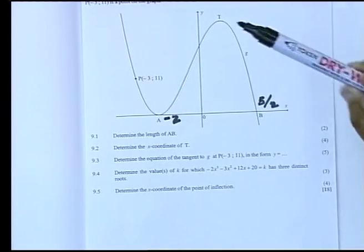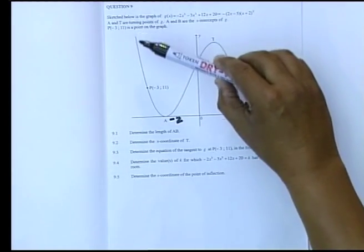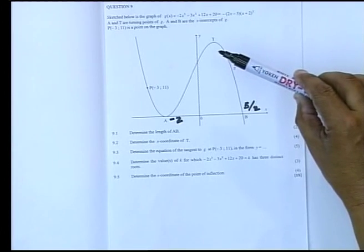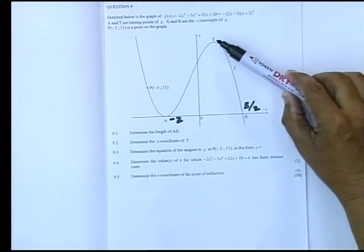So, this cubic graph starts off with a negative in front of x-cube. Hence, it was a decreasing graph, which then went up and increased and went down again.